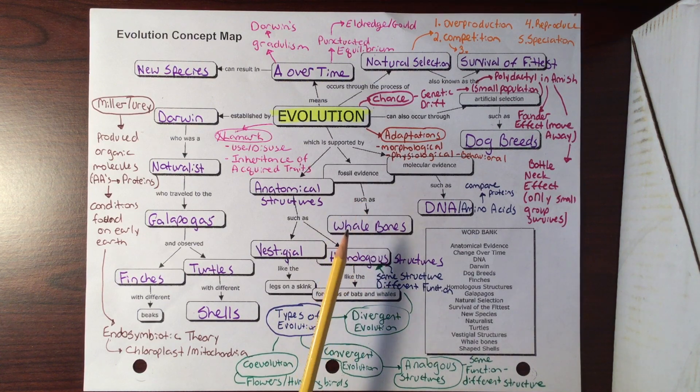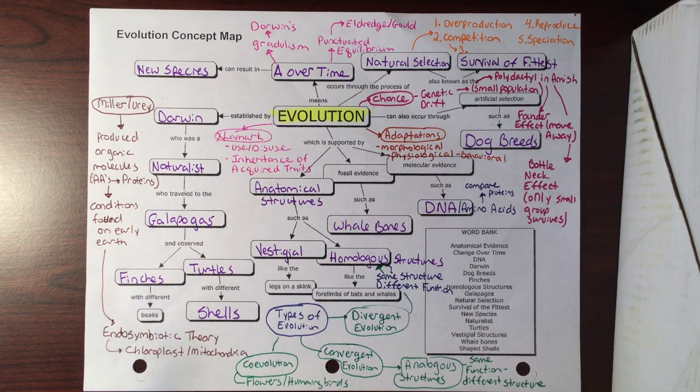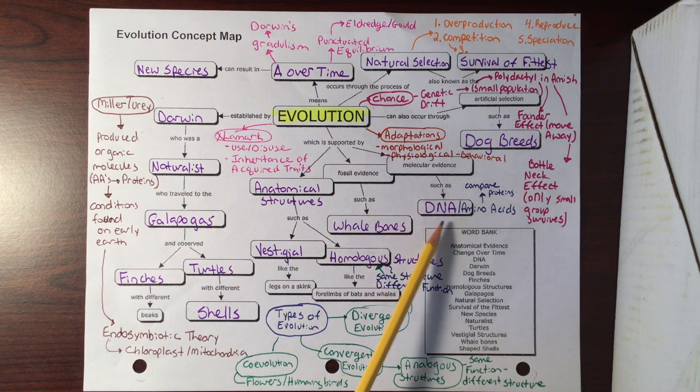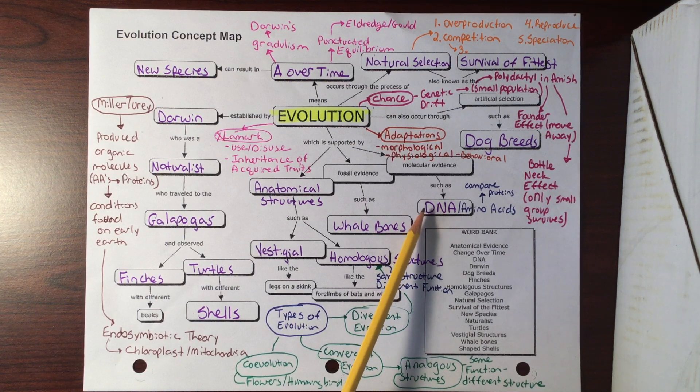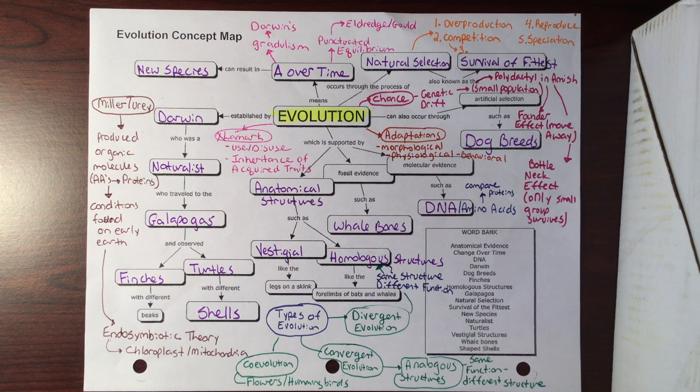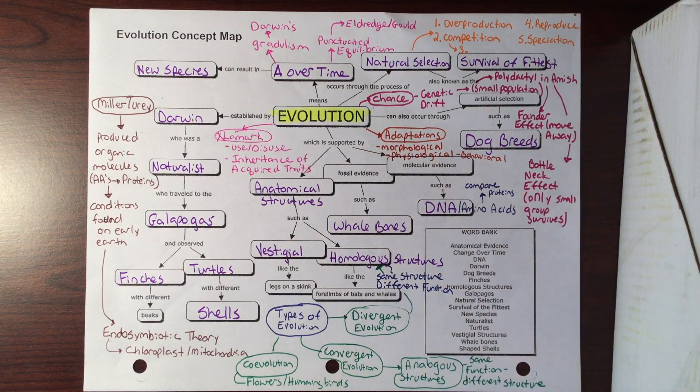He said those with the best beaks were adapted to them and they survived best on those particular islands. This idea of evolution is supported by different evidences of evolution. We talked about fossil evidence - I'll start in the middle here - such as whale bones, any types of bones. Fossils we can actually date them and we can get an idea of how things change over time.